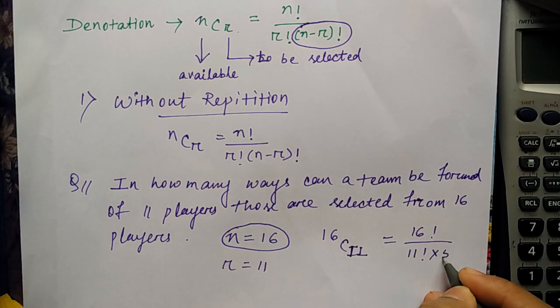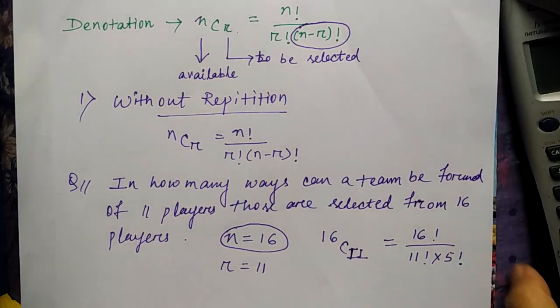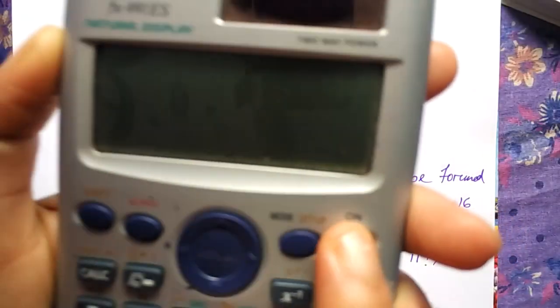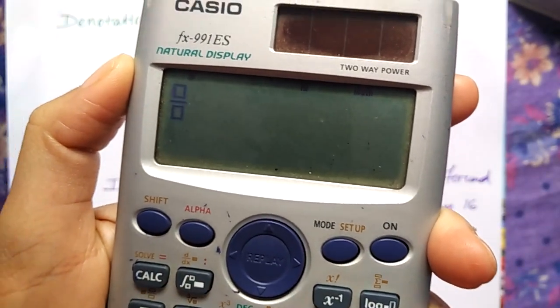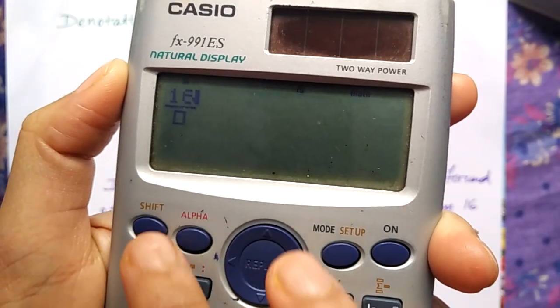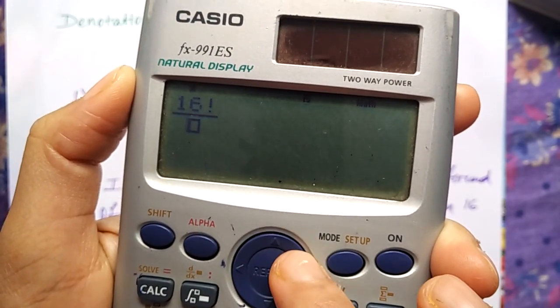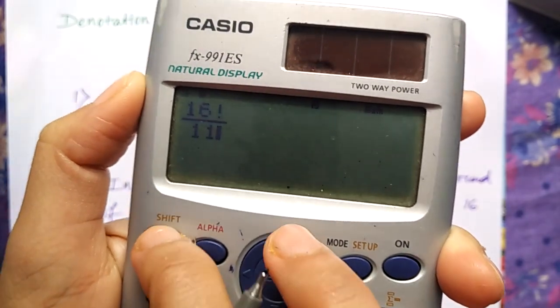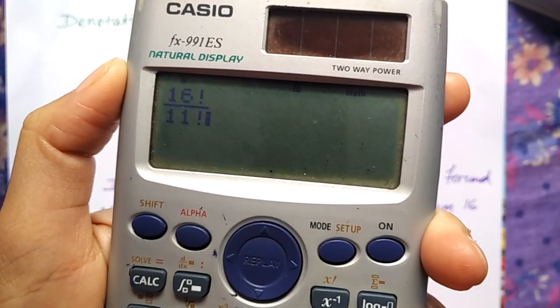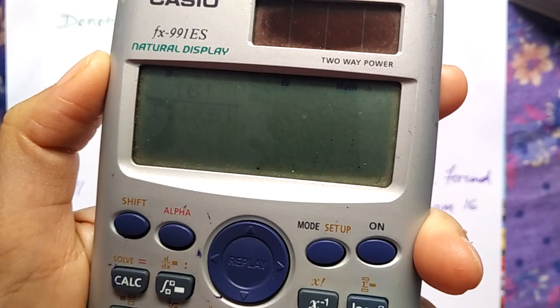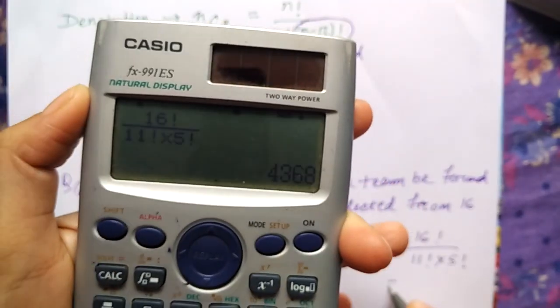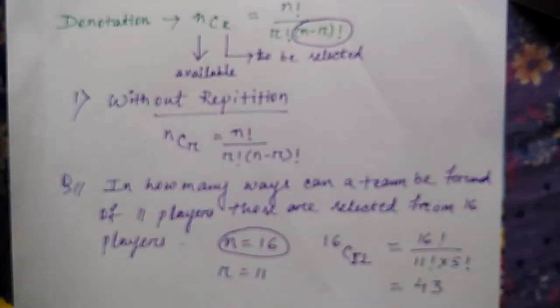16 minus 11 is 5 factorial. Now you can see the use of calculator: 16 factorial divided by 11 factorial into 5 factorial equals 4368.